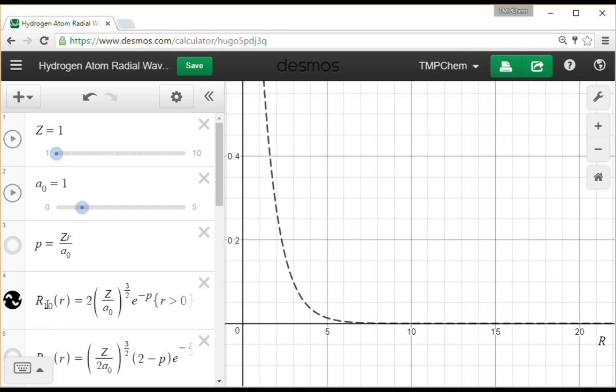We'll start off with R10 of R. I've got the values plotted there, plotted for R greater than 0. It's 2 times charge over A0 Bohr radius to the 3 halves, e to the minus rho. Rho being Z times R times A0.